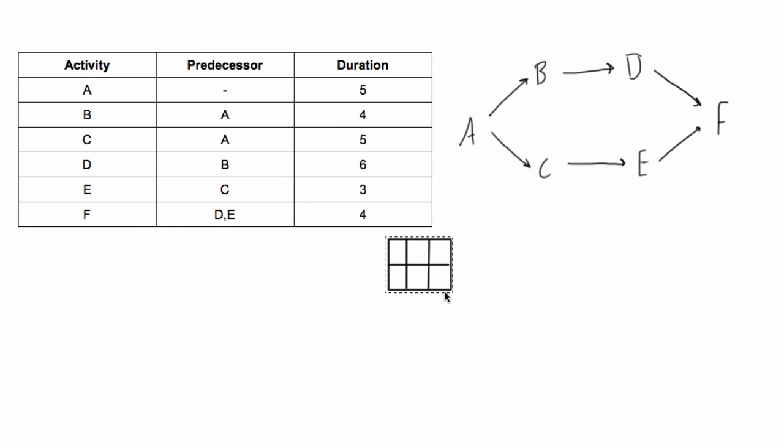Now what we're going to do is replace the nodes here with these squares because we'll be storing more information in them. From previous videos, you know that I have the activity name here and the duration down there. So we just need to draw this exact same network diagram or flowchart but with these as the nodes.